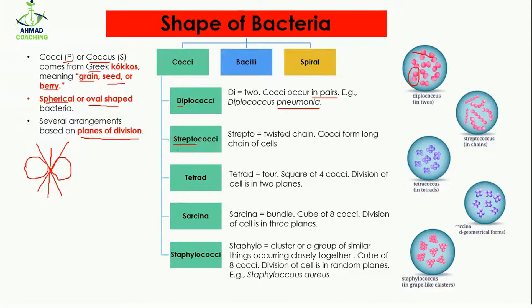Then comes streptococcus. 'Strepto' means twisted chain, so in this case the cocci form long chains of cells. You can see that so many cocci are joined together in the form of a chain, which is why it is known as streptococcus.